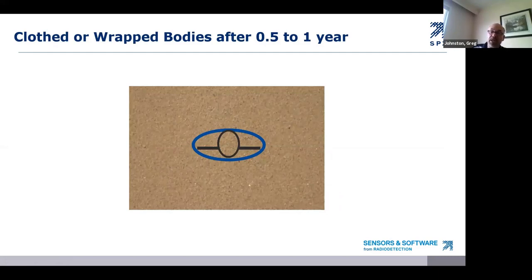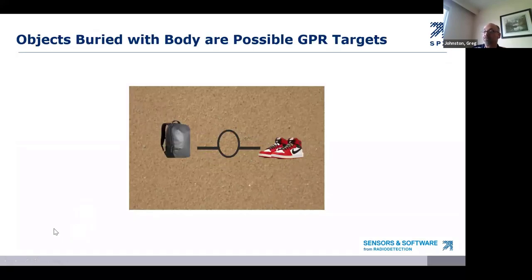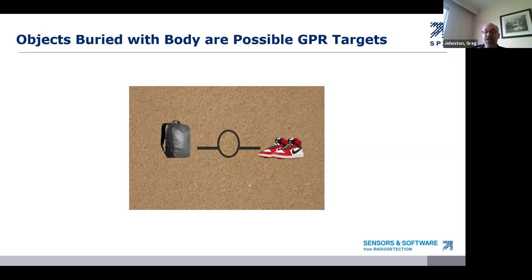Clothing helps to make a body a stronger target for a while, but eventually natural fibers degrade. Synthetic fibers last longer and may contain the body mass for a longer period of time. However, after a few years, it's necessary to look for other responses in the GPR data to try to identify a possible buried body. One of those things is GPR reflections from other objects buried with the body that may be slower to degrade — backpacks, shoes, large belt buckles, etc. may provide a response. There's no way to differentiate these responses from natural objects like tree roots, but they can provide a chance.